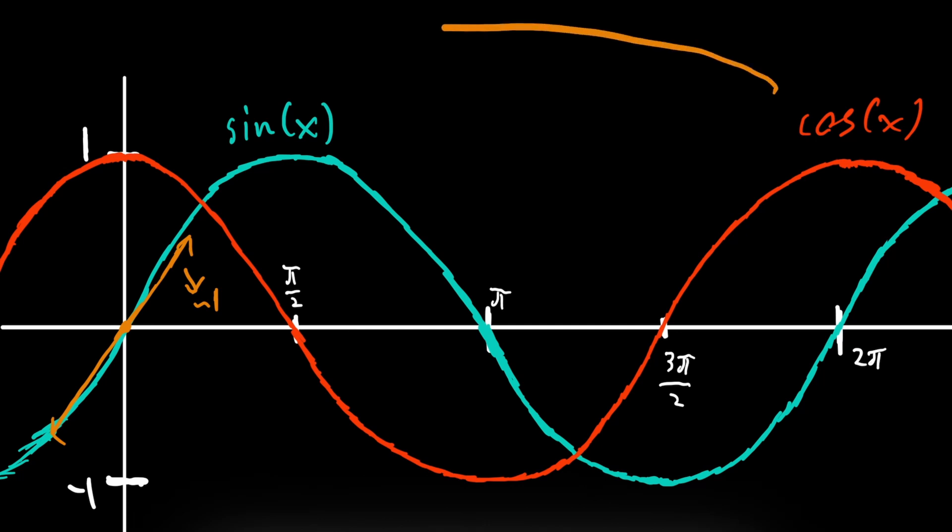And as a result, cosine of x is equal to one at x is equal to zero. What about this horizontal tangent line right here? This horizontal tangent line has a slope of zero because it's parallel to the x-axis.